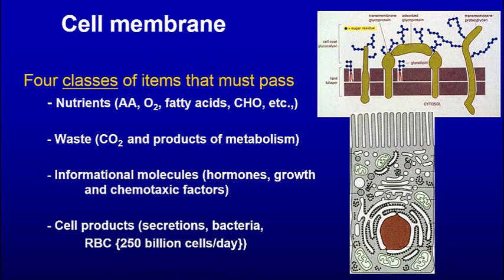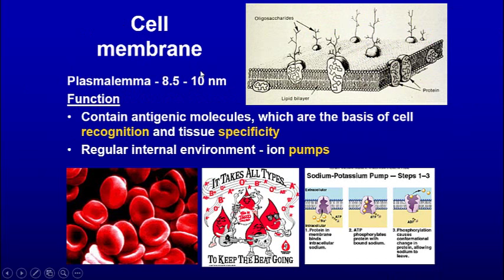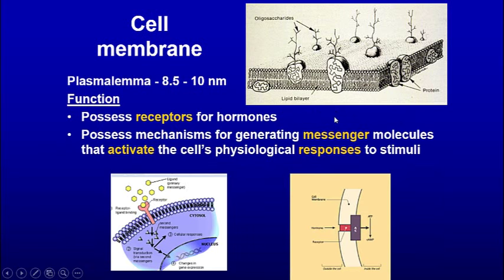Red blood cells — about 250 billion per day are produced and destroyed — must be phagocytized. The cell membrane also contains antigens on the surface, as we can see with the different blood types. It has a series of ATP-driven pumps, channels, and proteins attached to the glycocalyx. It may also have receptors to receive inflammation molecules, and then a mechanism — such as changing cyclic AMP — to stimulate some physiologic response inside the cell.